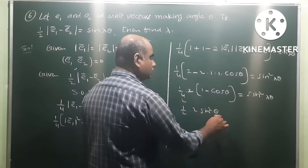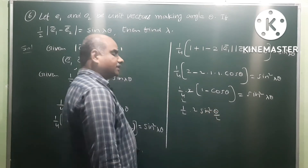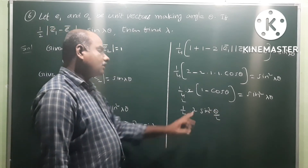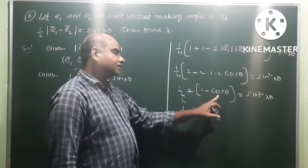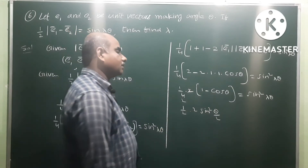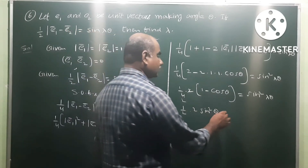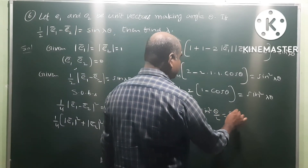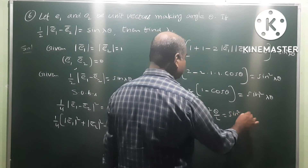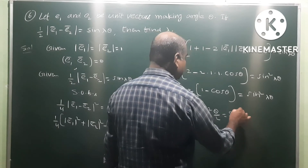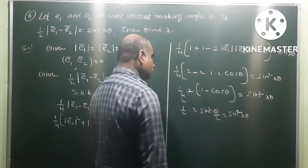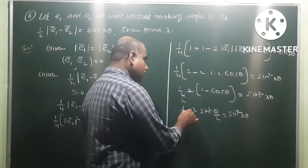Applying the trigonometric identity: 1 minus cos(theta) equals 2*sin squared(theta/2). So 2*sin squared(theta/2) equals sin squared(lambda*theta).